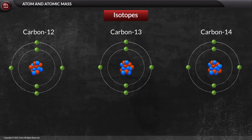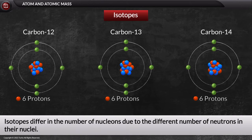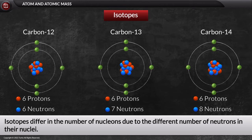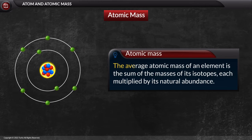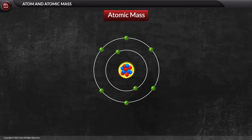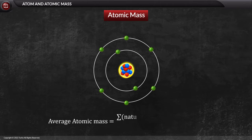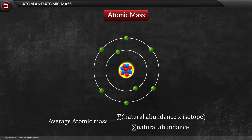A term closely associated with atomic mass is isotope. Isotopes differ in the number of nucleons due to different numbers of neutrons in their nuclei. Atomic mass is usually associated with average atomic mass. The average atomic mass of an element is the sum of the masses of its isotopes, each multiplied by its natural abundance. The formula is the summation of isotopes and their respective natural abundances divided by total natural abundance.